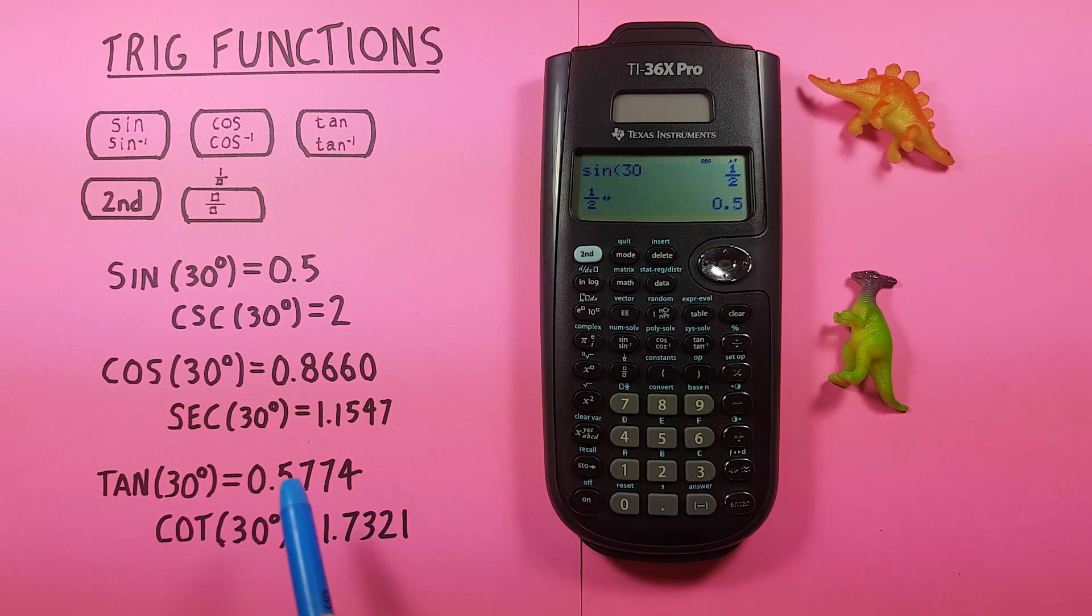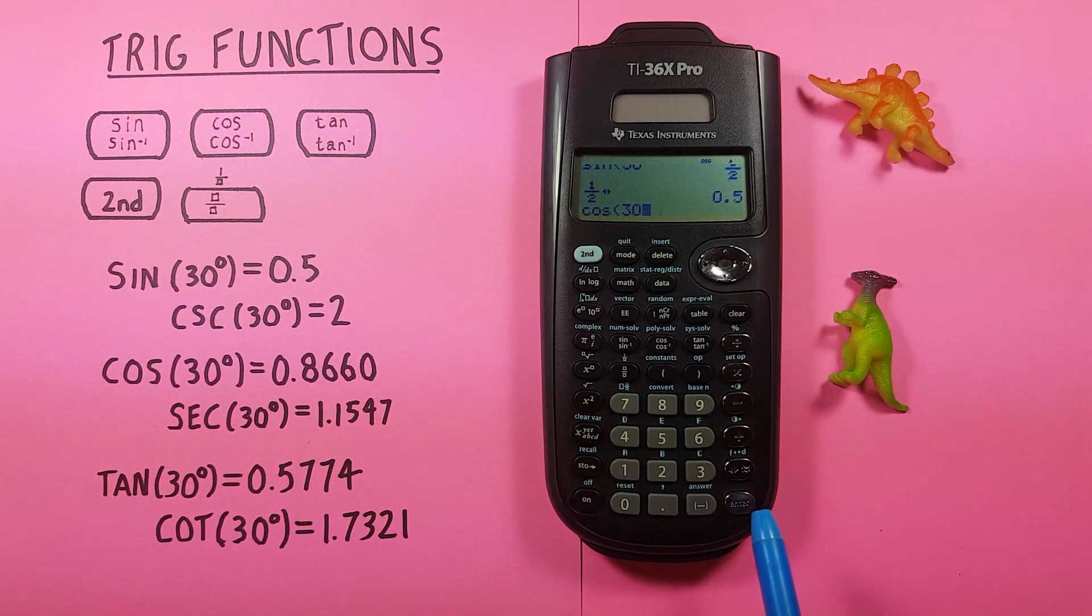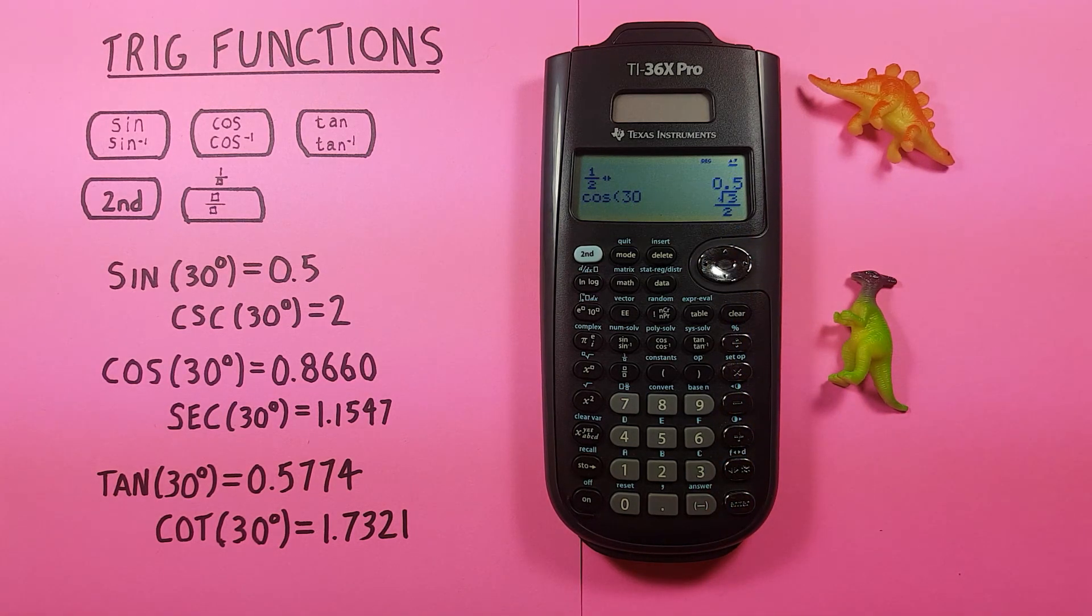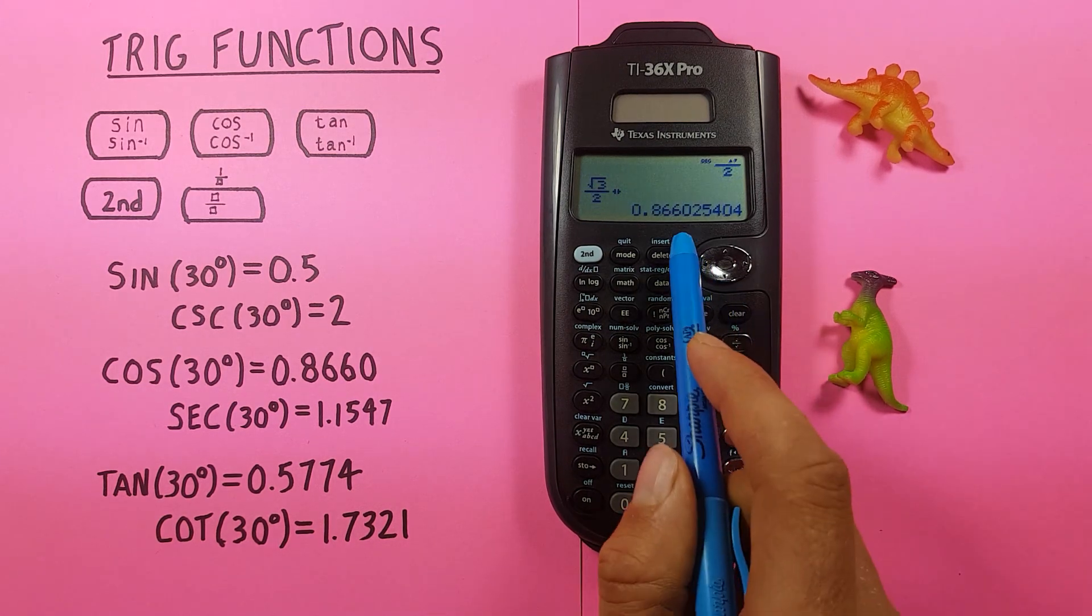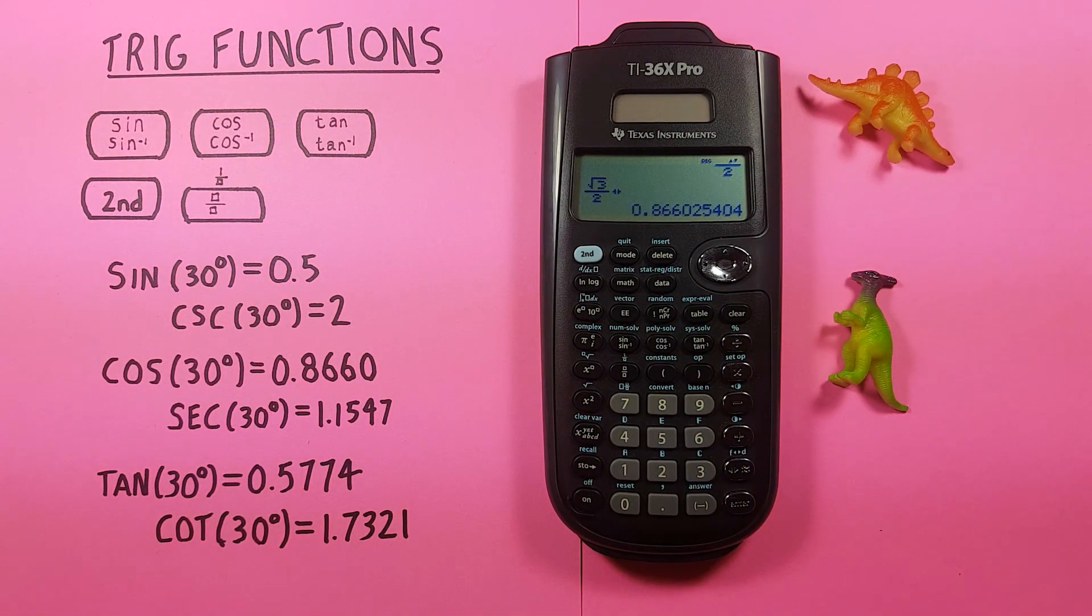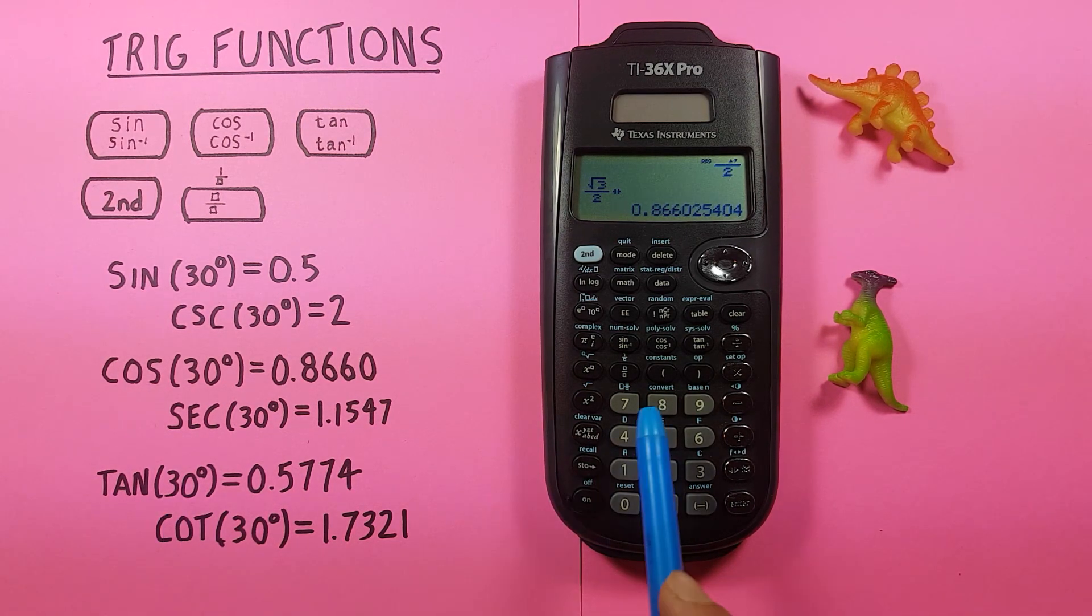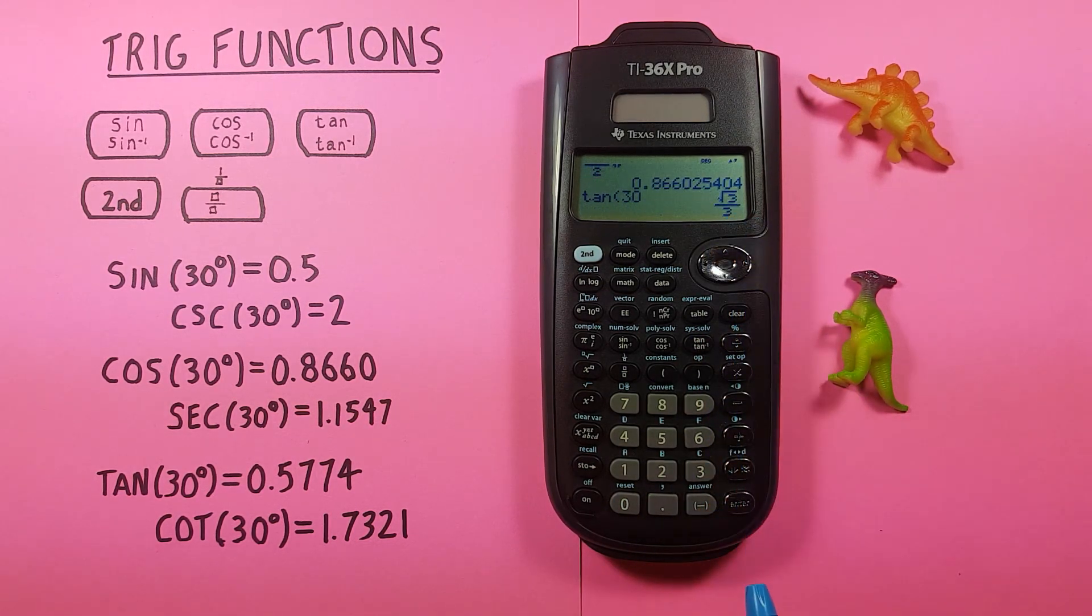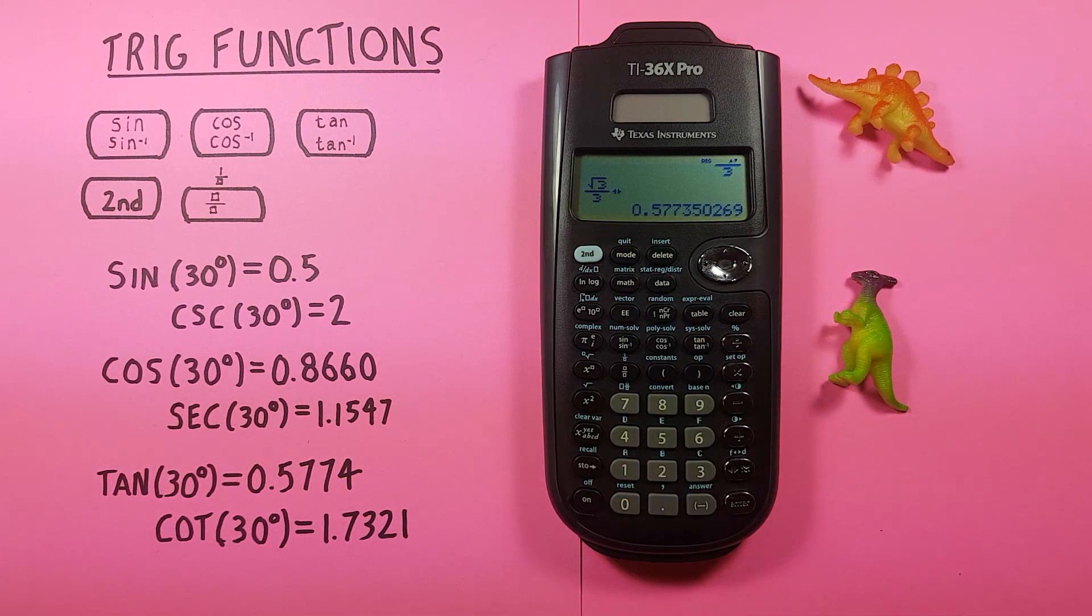For cosine we do it the same way. Let's say we want to do cosine of 30 degrees. Press cos, 30, enter, and there we go as a fraction. If we want to convert that to a decimal, press this key here and we get cosine of 30 degrees as 0.8660. And again with tan: tan, 30, enter. There's our fraction and our decimal of 0.57735.